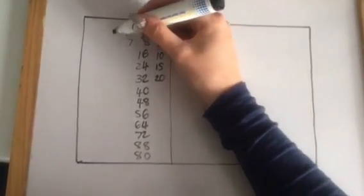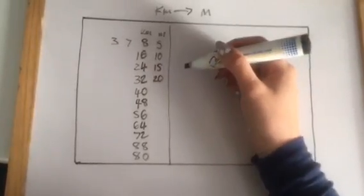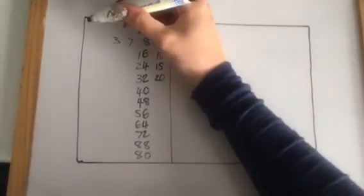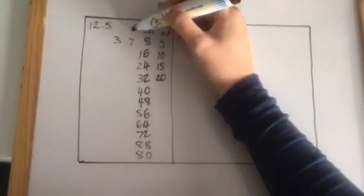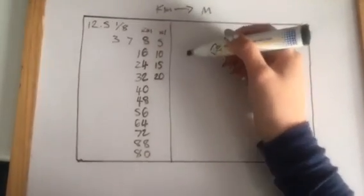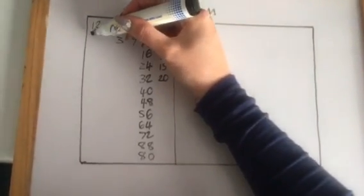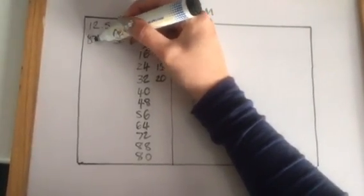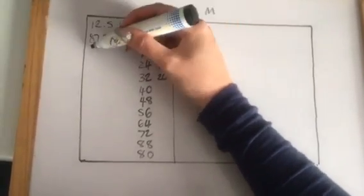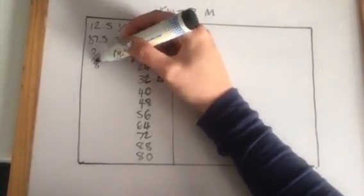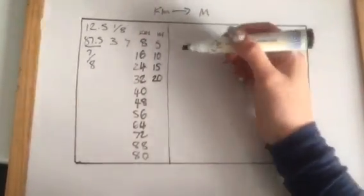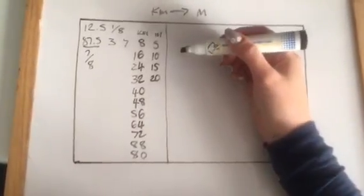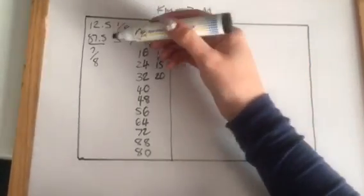And what I also then did next to it is I also did my seven times table and I did my three times table. I also made a quick note up here that 12.5 is 1/8. I also made a quick note that 87.5 is 7/8, because we look at that fraction there or that percentage and we think, oh my goodness, what is that as a fraction?